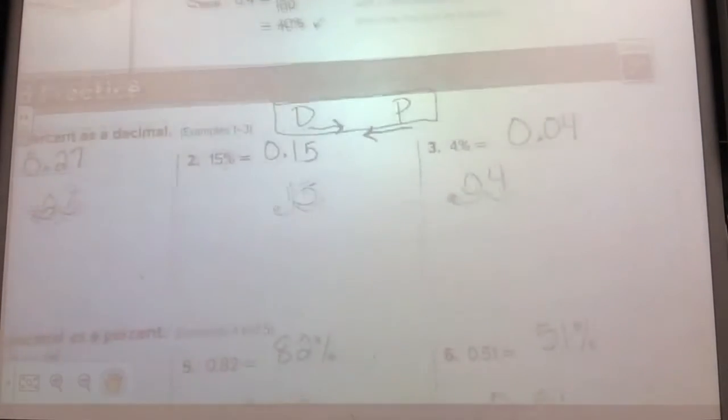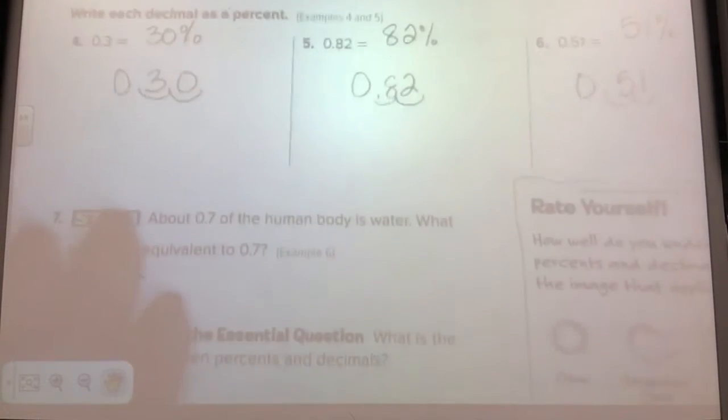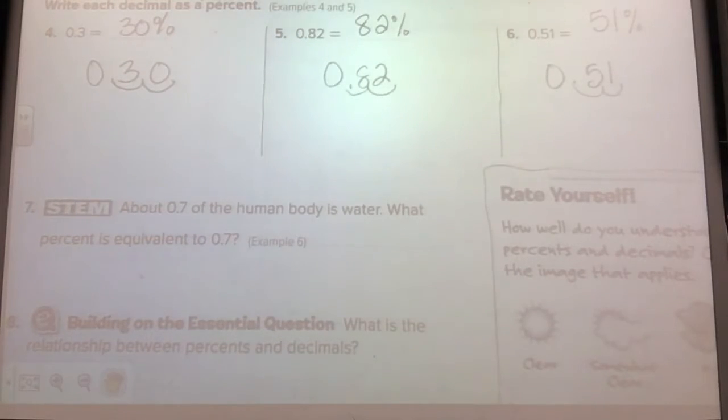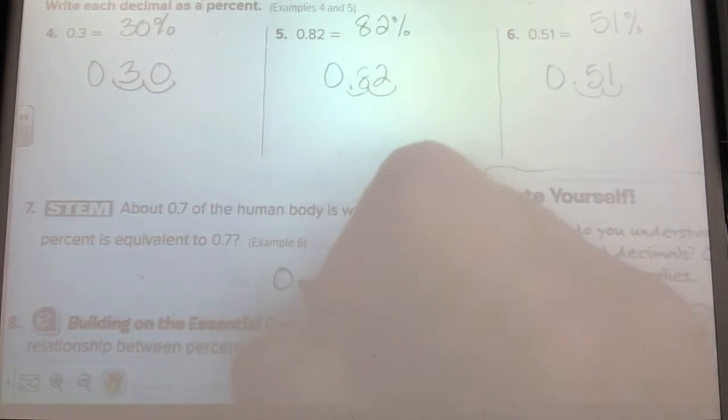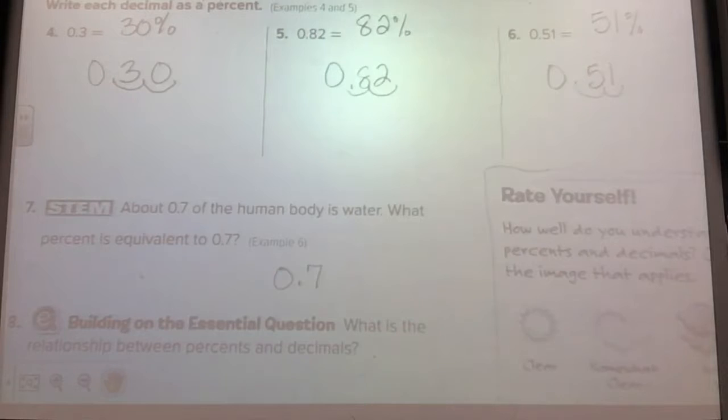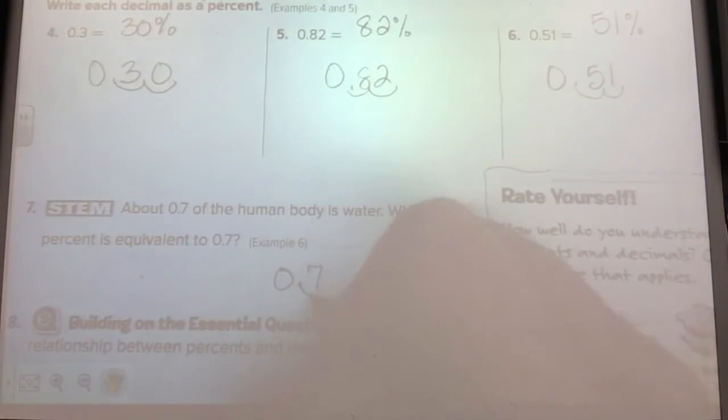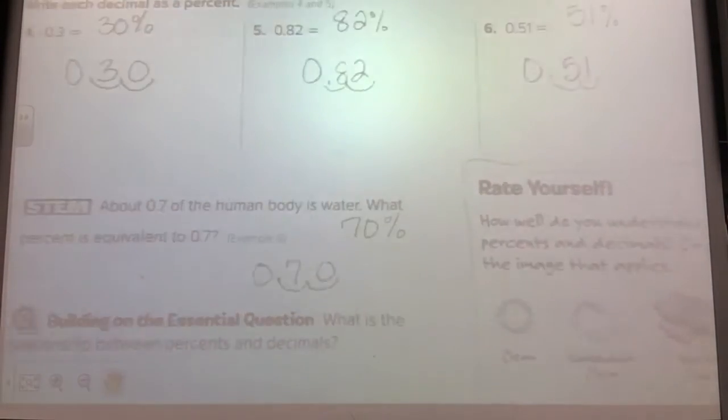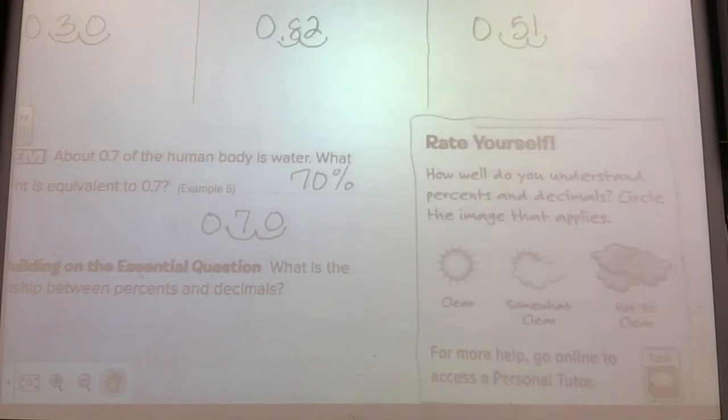Alright, this last one down here says about 0.7 of the human body is water. What percent is equivalent to 0.7? We got a decimal. What are we going to do? Two places to the right or two places to the left? Look at your key if you forgot. D is before P. We're going to the right. One, two. Seventy. Seventy percent. Seventy percent of the human body is water. Isn't that a lot? It's a lot.